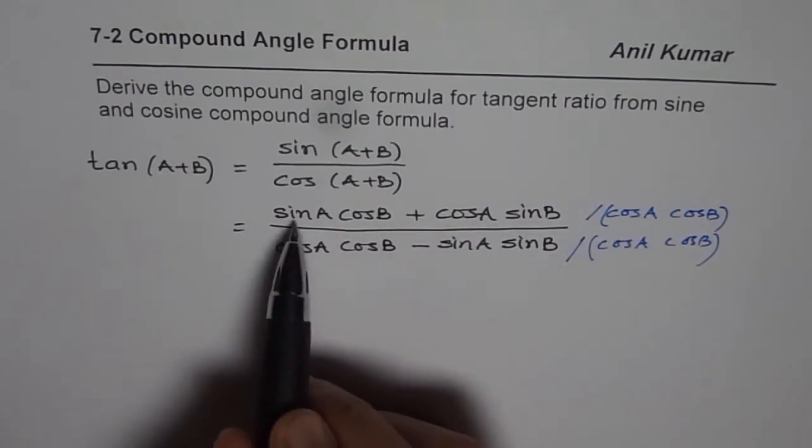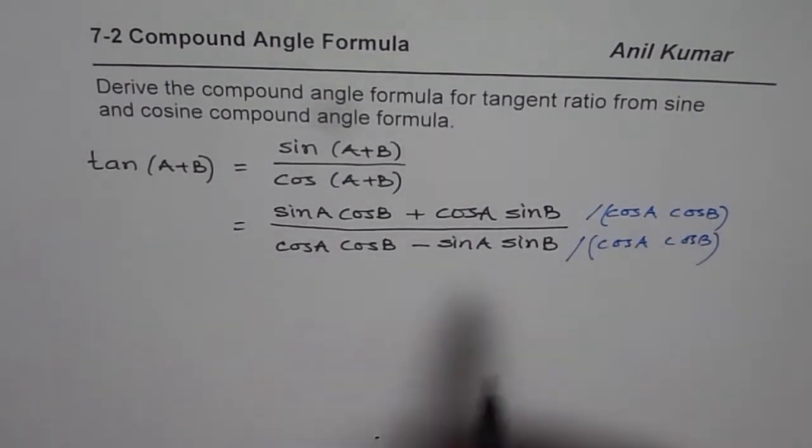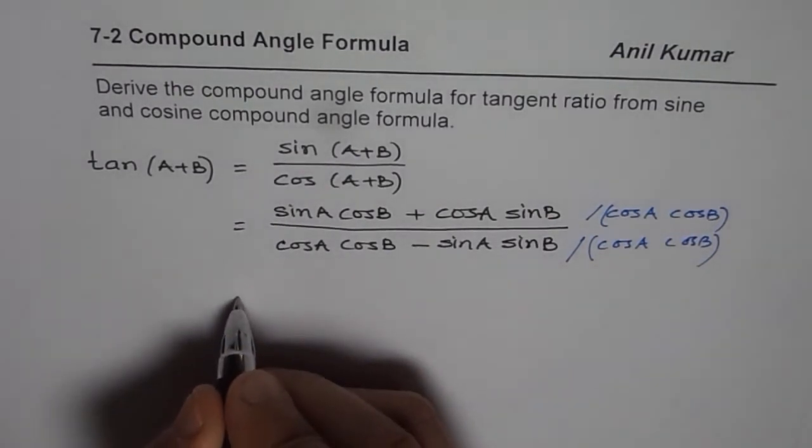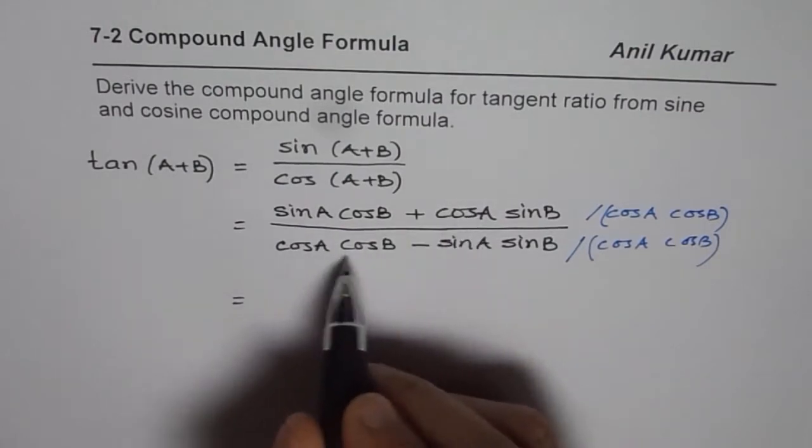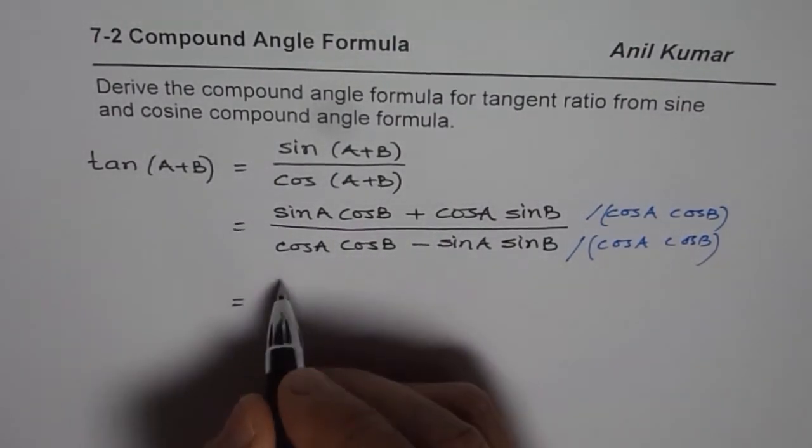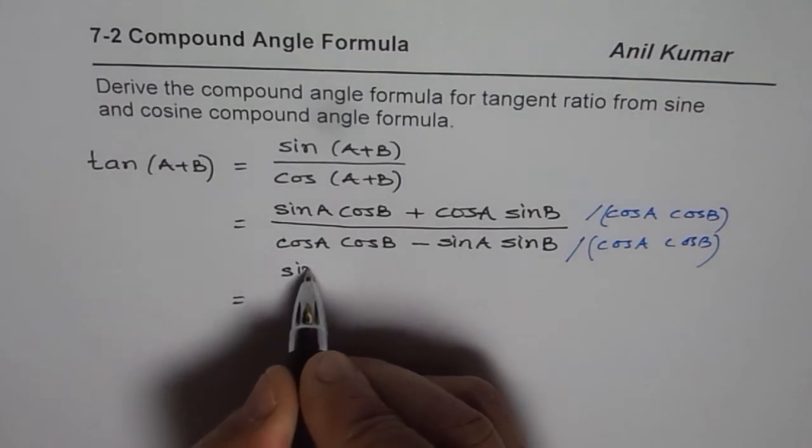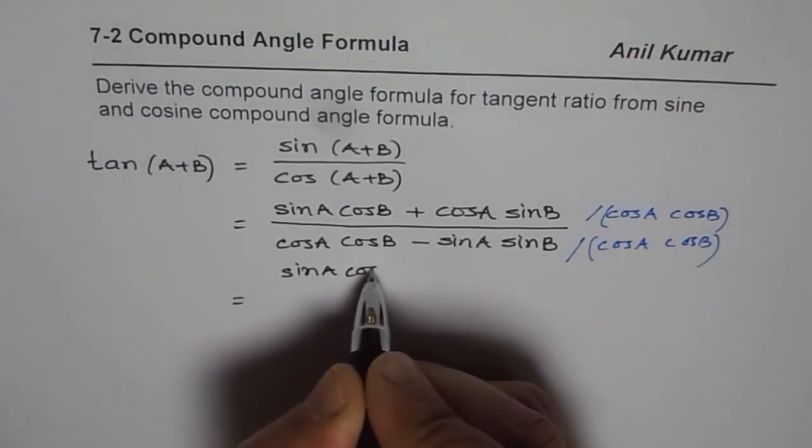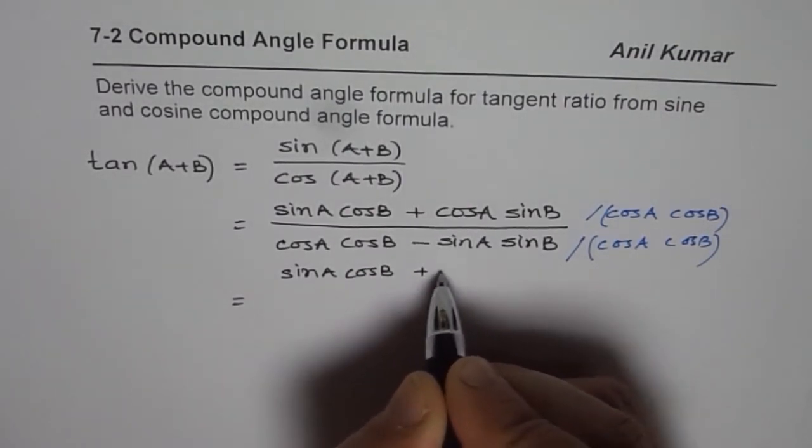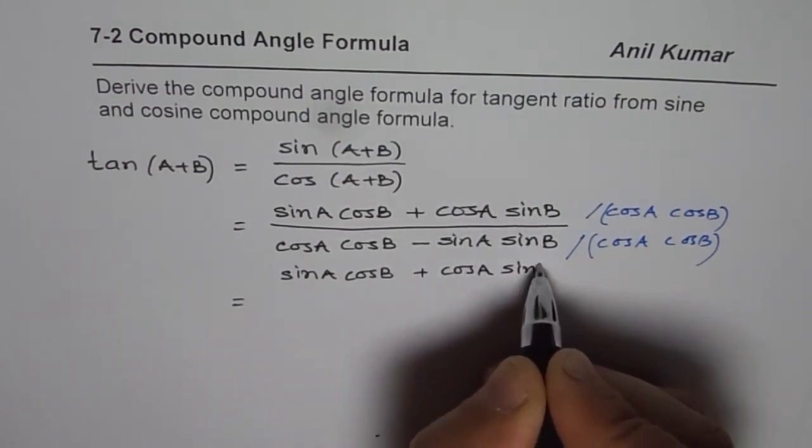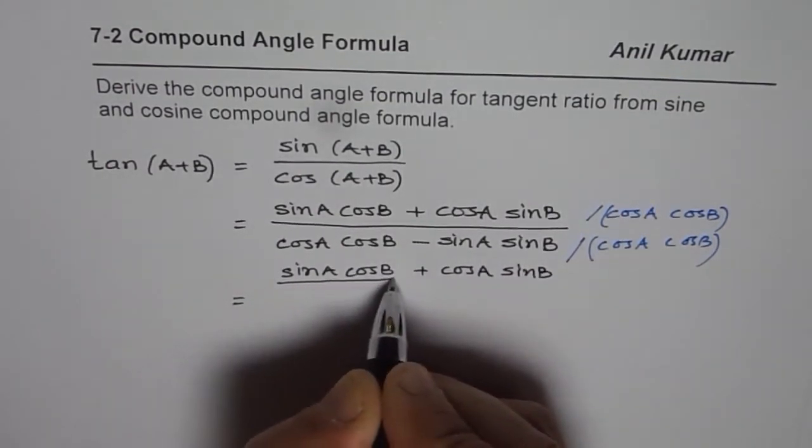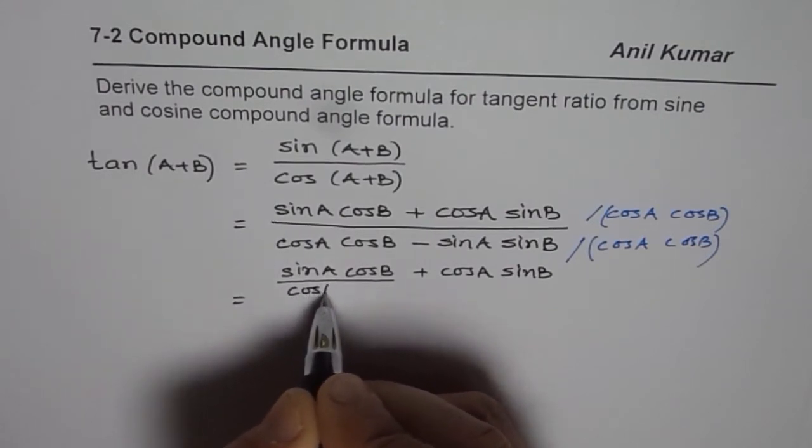So, if you divide sine A cos B by cos A cos B, what do you get? Let me rewrite this. What I am saying is, divide all these terms by cos A cos B. So we have sine A cos B plus cos A sine B. We are dividing each term by cos A cos B.